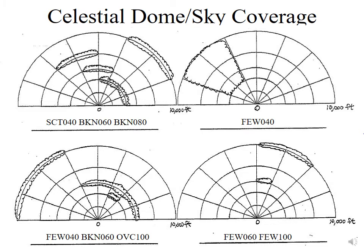Lastly, we have no cloud deck at 2,000 or 4,000 feet. The first one is at 6,000 feet with one-eighth coverage — FEW 060. We don't have any additional clouds until 10,000 feet, which covers one additional quadrant for two-eighths coverage total. That still falls into the category of few, so that's FEW 100.